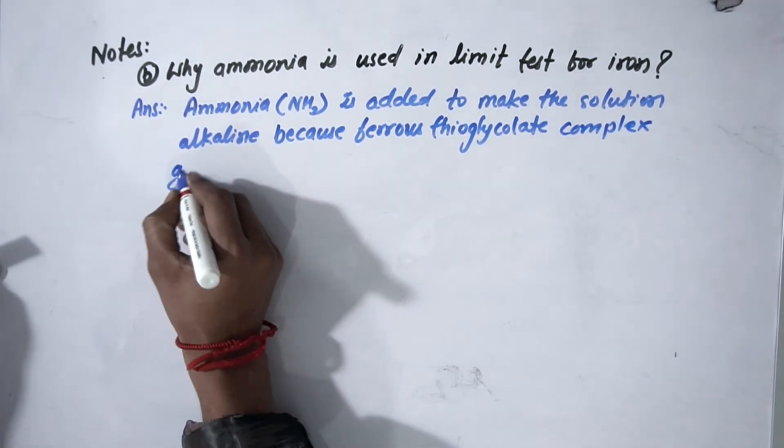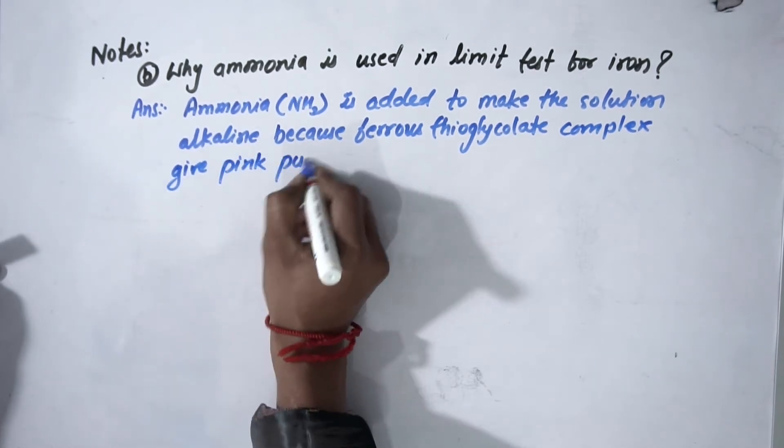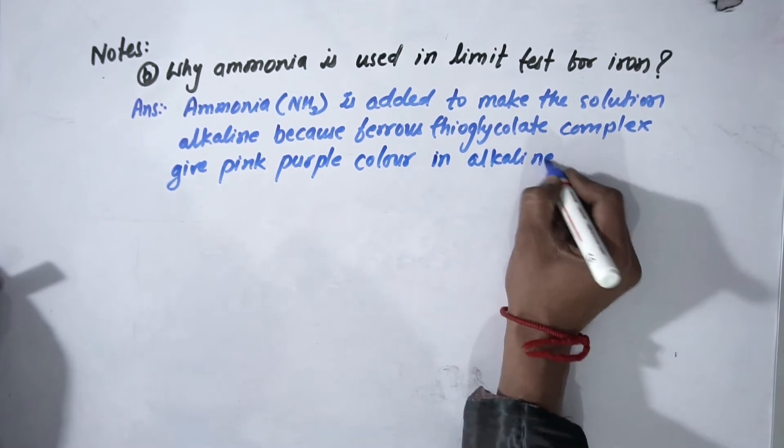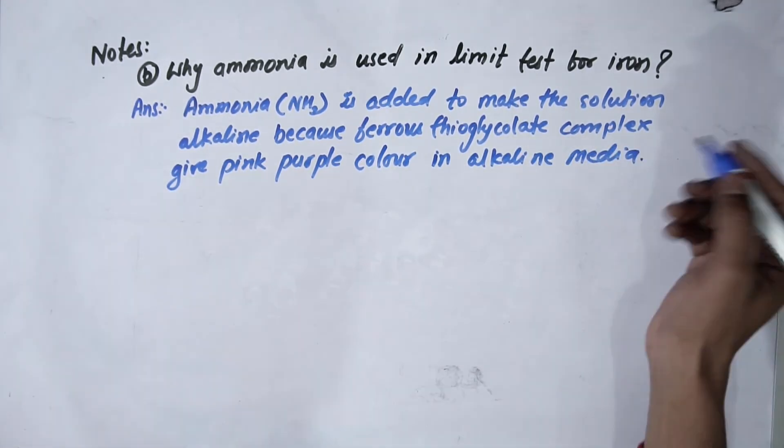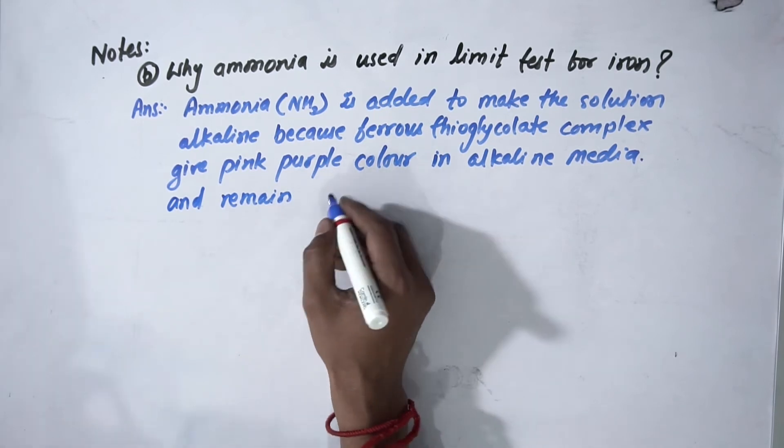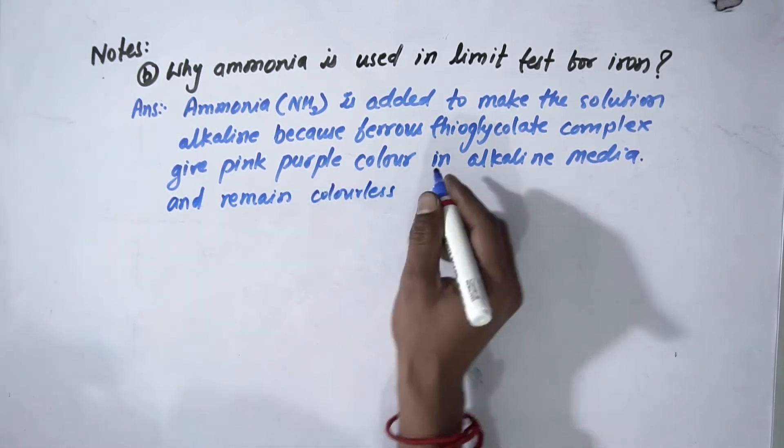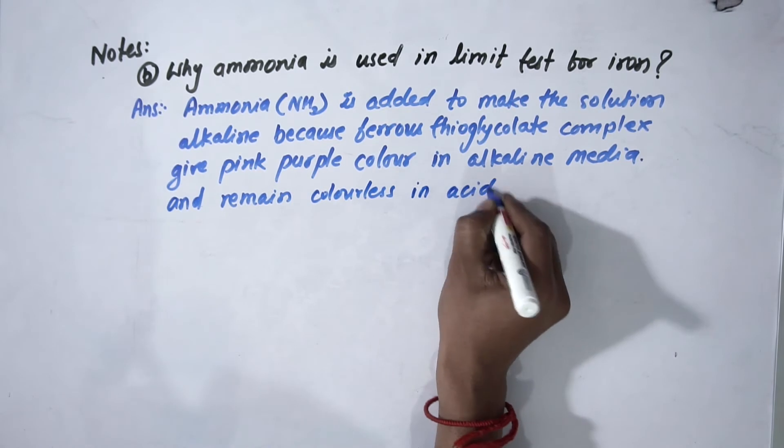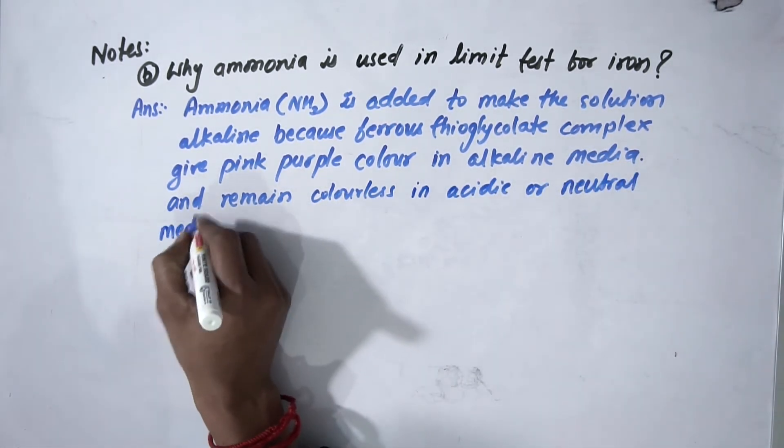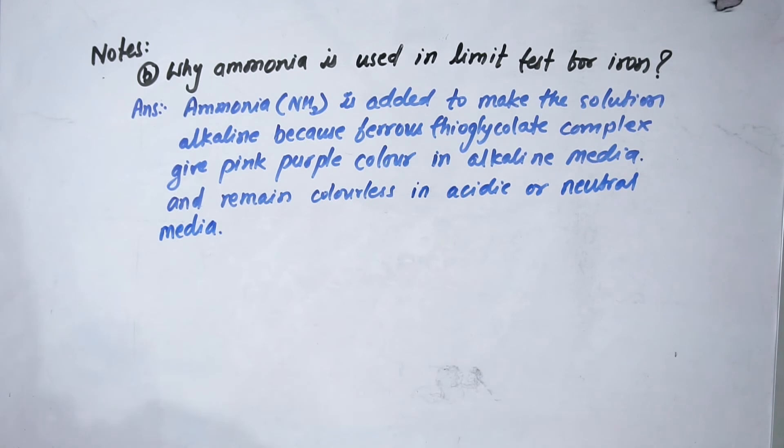reacting ferrous with thioglycolic acid, will give pink-purple color only in alkaline media. It remains colorless in acidic or neutral media. So if it is acidic or neutral, you are not going to get any color, but if it is